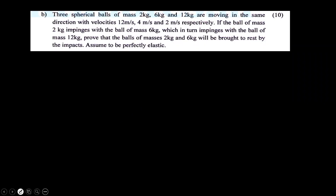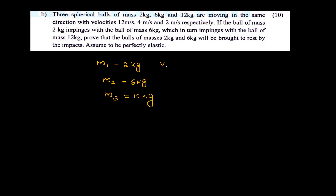Three spherical balls of mass 2 kg, 6 kg, and 12 kg are moving in the same direction with velocities 12 m/s, 4 m/s, and 2 m/s respectively. So M1=2 kg, M2=6 kg, M3=12 kg, and U1=12 m/s, U2=4 m/s, U3=2 m/s. If the ball of mass 2 kg impinges with the ball of mass 6 kg, which in turn impinges with the ball of mass 12 kg, prove that the balls of mass 2 kg and 6 kg will be brought to rest by this impact, assumed to be perfectly elastic.